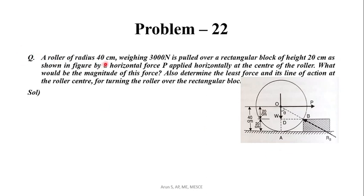A roller of radius 40 cm weighing 3000 N is pulled over a rectangular block of height 20 cm, as shown in the figure, by a horizontal force P applied at the center of the roller. What will be the magnitude of this force? Also determine the least force and its line of action at the roller center for turning the roller over the rectangular block.